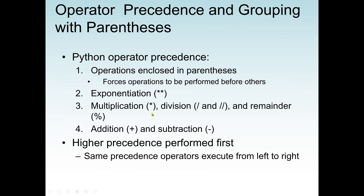Python operator precedence is almost the same as arithmetic: parentheses execute first, then exponentiation, then multiplication, division, and remainder (all on the same level), then addition and subtraction last. Higher precedence operations perform first. For example, in (2 + 3) * 5, the addition inside parentheses executes first because of the parentheses.